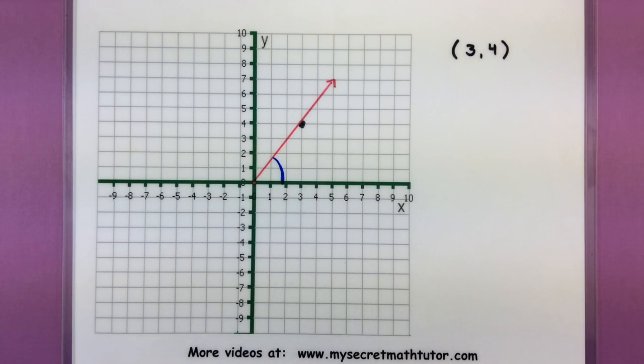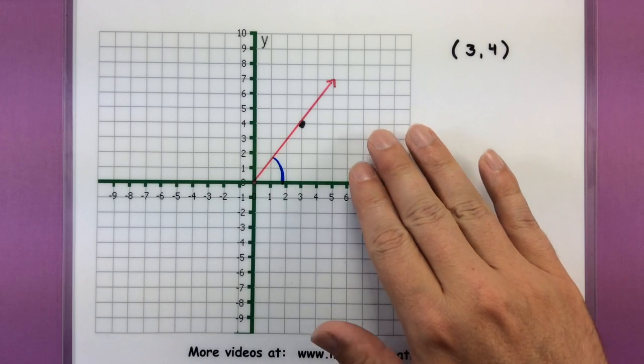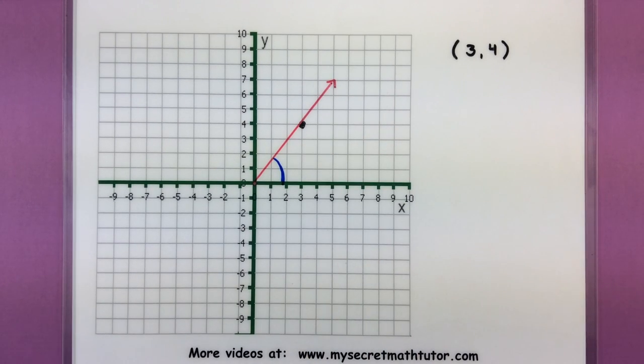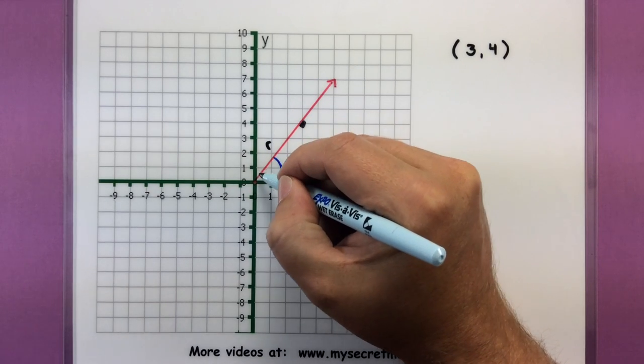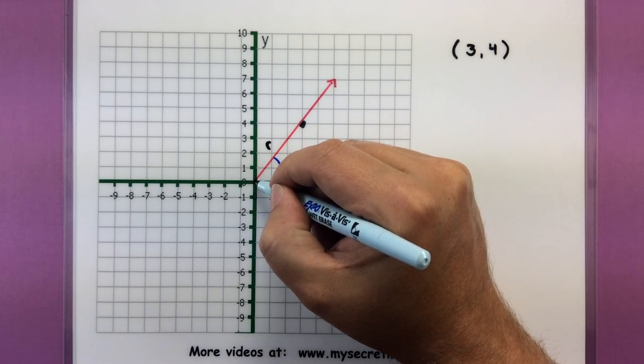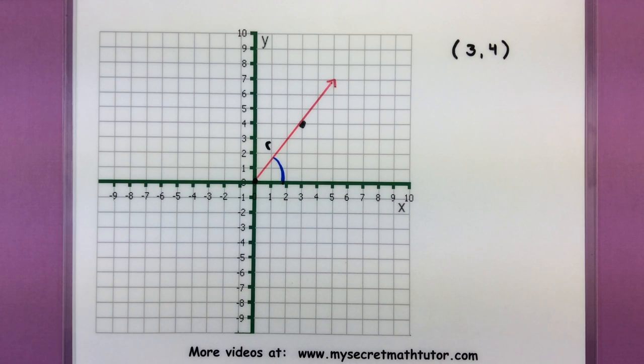So a really great connection between what we do in a lot of algebra courses to the trigonometry that we have. Now as long as we have this we can also figure out a little bit more about it. We can figure out this value the length of r and that's really the distance from the origin to our point.